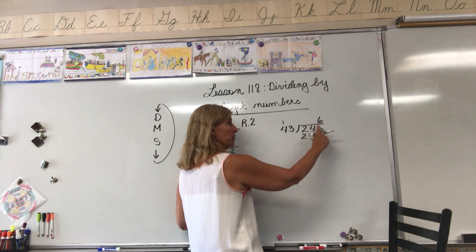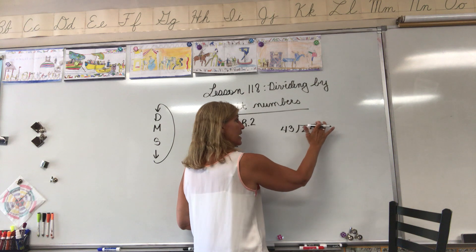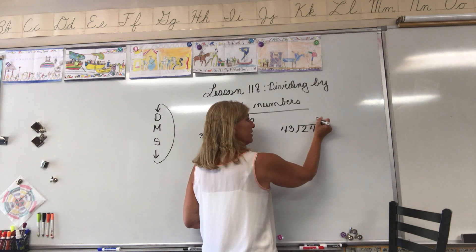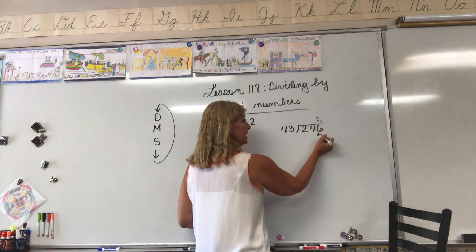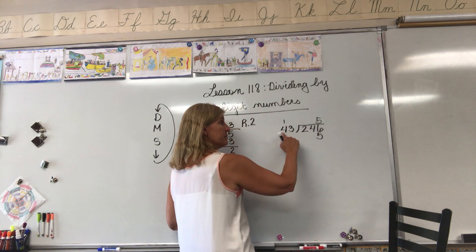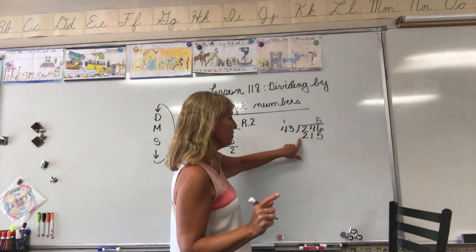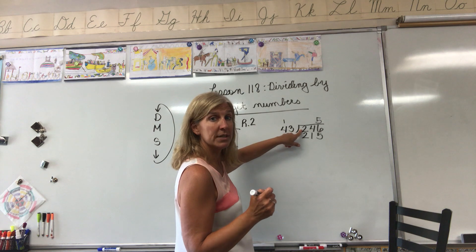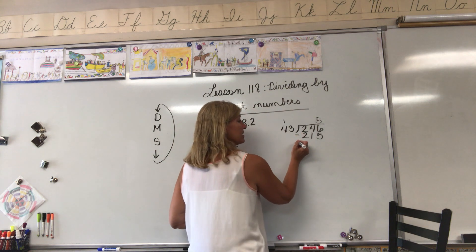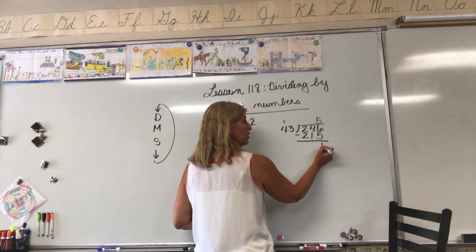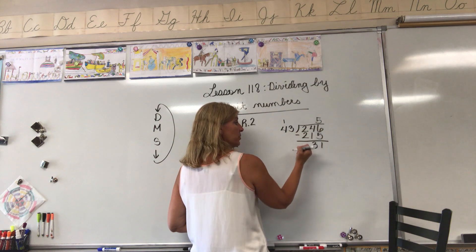43 does not go into 246 six times because that would have been too large of a number. We're going to go down. Let's try 5. 5 times 3 equals 15, 5 times 4 equals 20 plus 1 is 21. Stop. Is 215 larger than 246? No, it is not. That means I can continue. Now I can subtract. 6 minus 5 equals 1, 4 minus 1 equals 3, 2 minus 2 equals 0.